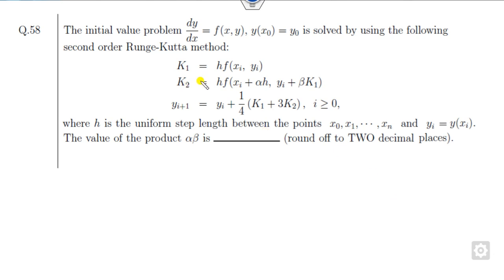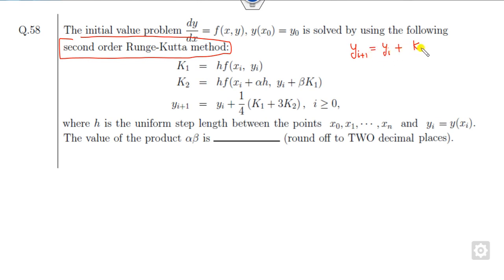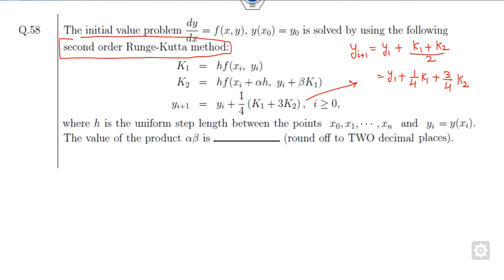Now look at the next problem: a differential equation solved with the help of the second-order Runge-Kutta method. The standard second-order Runge-Kutta formula is: y_{i+1} = y_i + h·(k₁ + k₂)/2. However, in this problem the weights are not equal halves — it suggests (1/4)·k₁ + (3/4)·k₂. The first step is to find the values of alpha and beta.